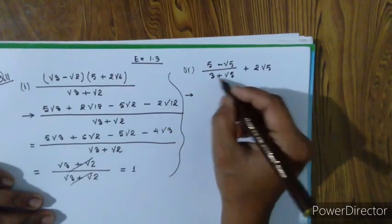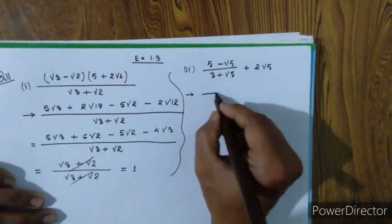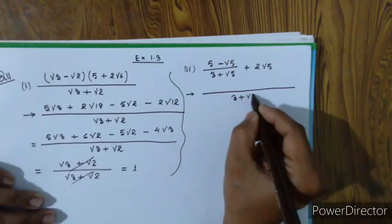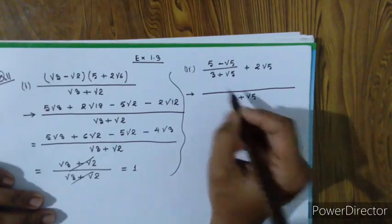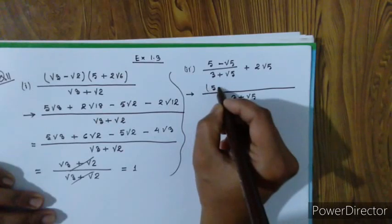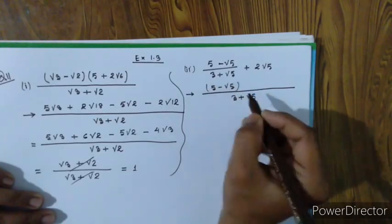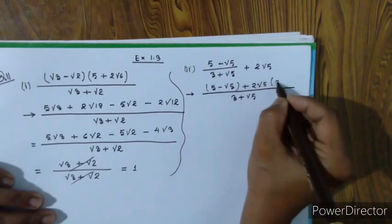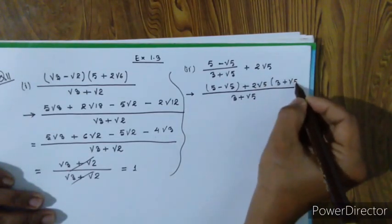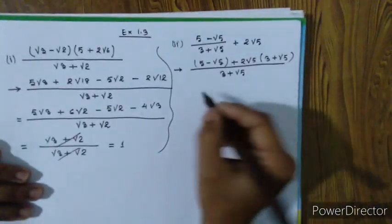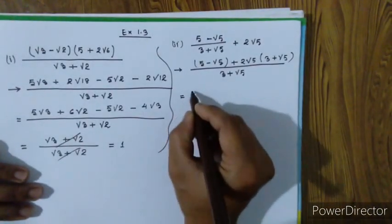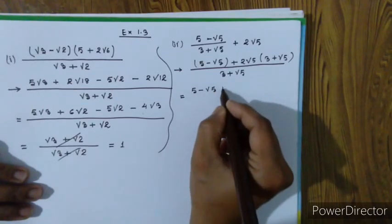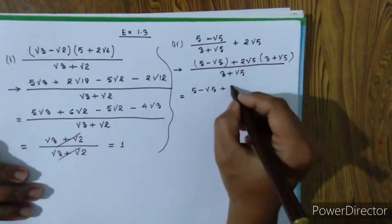We take the LCM. The LCM is three plus root five. The first term, five minus root five, multiplied accordingly. The second term, two root five, multiplied by three plus root five. So the bracket gives us plus six root five, plus two into five.